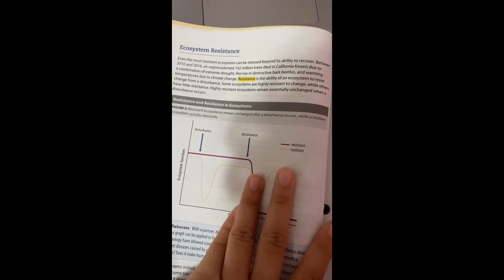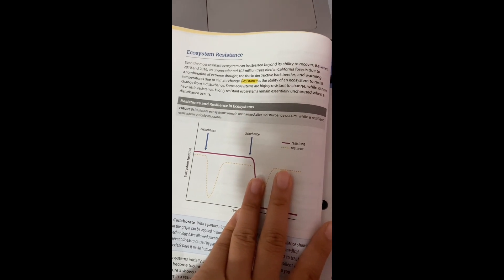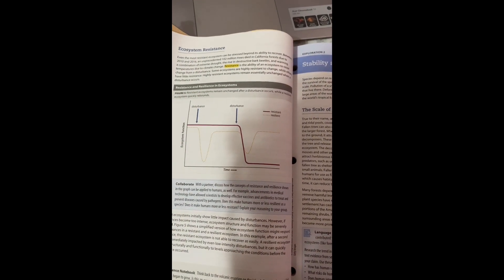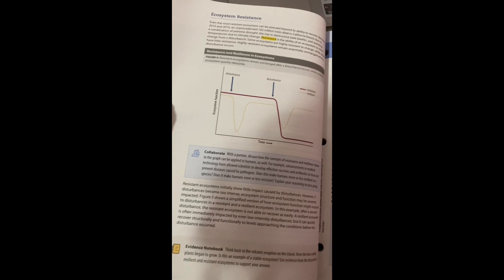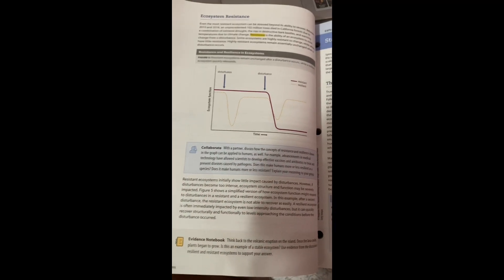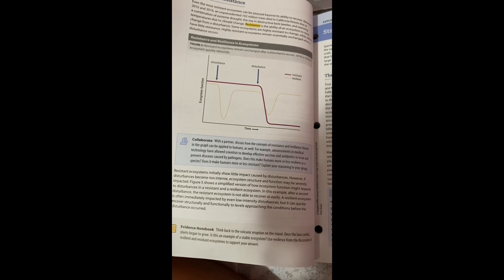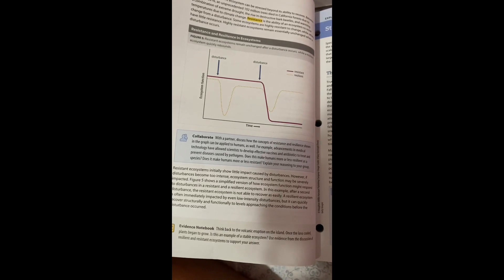Some ecosystems are highly resistant while others have little resistance to disturbance. Resistant ecosystems remain relatively unchanged when a disturbance occurs. They initially show little impact caused by disturbances. However, as soon as disturbance becomes too intense, the structure and function may be impacted.